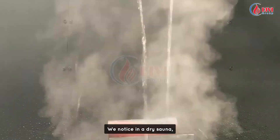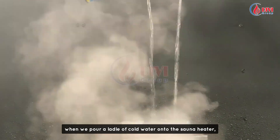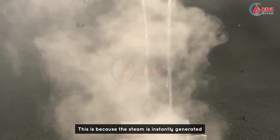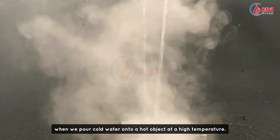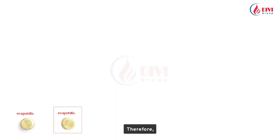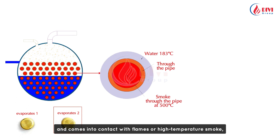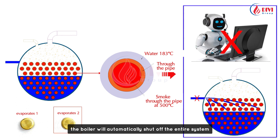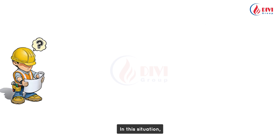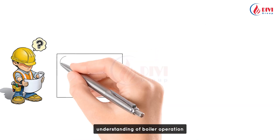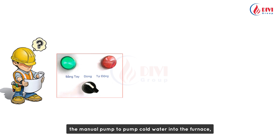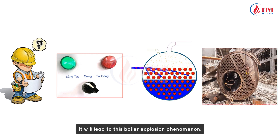Consider a dry sauna: when we pour a ladle of cold water onto the sauna heater, we see a strong burst of hot steam, because steam is instantly generated when cold water contacts a very hot object. Therefore, when the boiler runs out of water for the second time — meaning part of the steel is no longer submerged and contacts flames or high-temperature smoke — the boiler will automatically shut off the entire system and cannot operate in automatic mode, to prevent pumping cold water into the furnace. If the operator lacks knowledge and manually pumps cold water into the furnace, it will lead to a boiler explosion. This is the most common scenario currently.